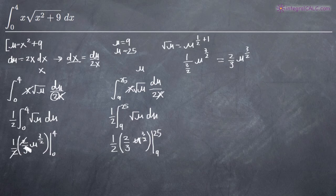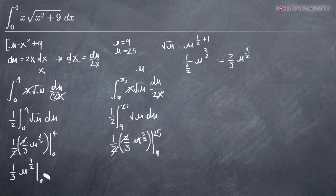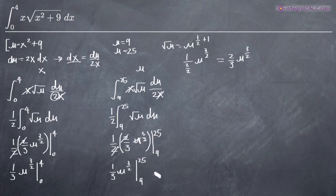We can simplify this somewhat. The 2's here are going to cancel on both sides, so we'll end up with 1 third times u to the 3 halves on each. You can see that they're exactly the same, which makes sense — that's exactly what we wanted.